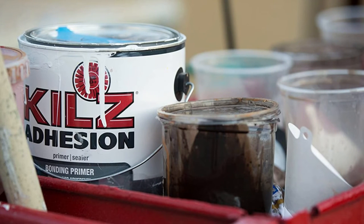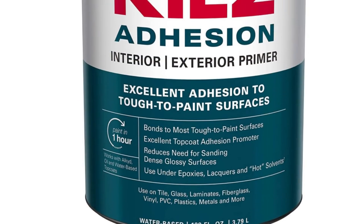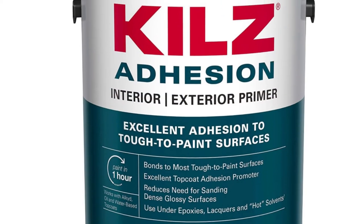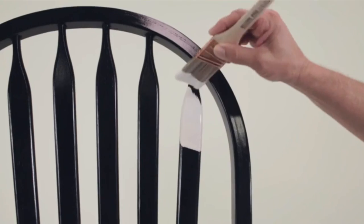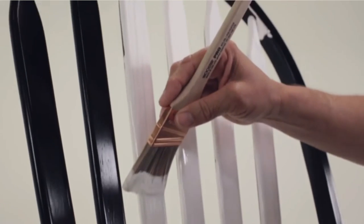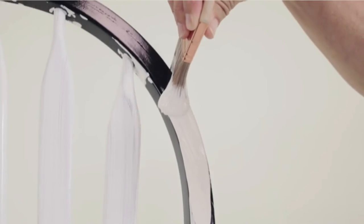Like the products mentioned above, the KILZ Adhesion works on interior and exterior surfaces alike. You can also use it on surfaces that have been previously painted. Bear in mind that if you use a primer on this kind of surface, you would have to sand it as well.